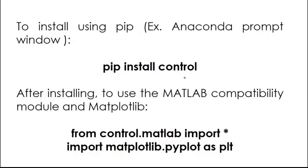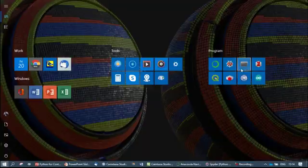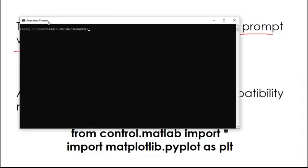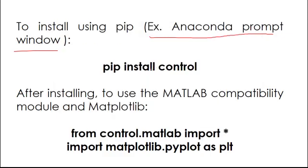To install the control package using pip, you will need this Anaconda prompt window if you are using Anaconda. Using this prompt here, you can do pip install control and enter. Of course you require also an internet connection. You will install this package.